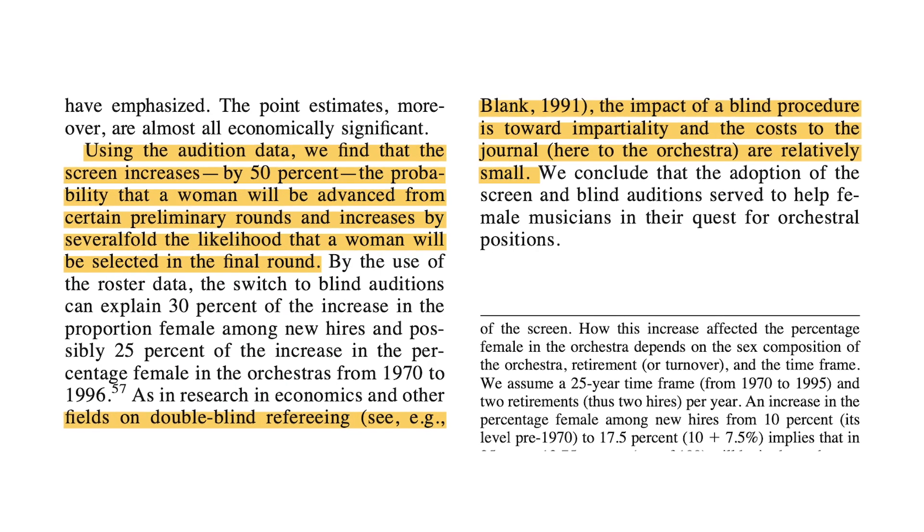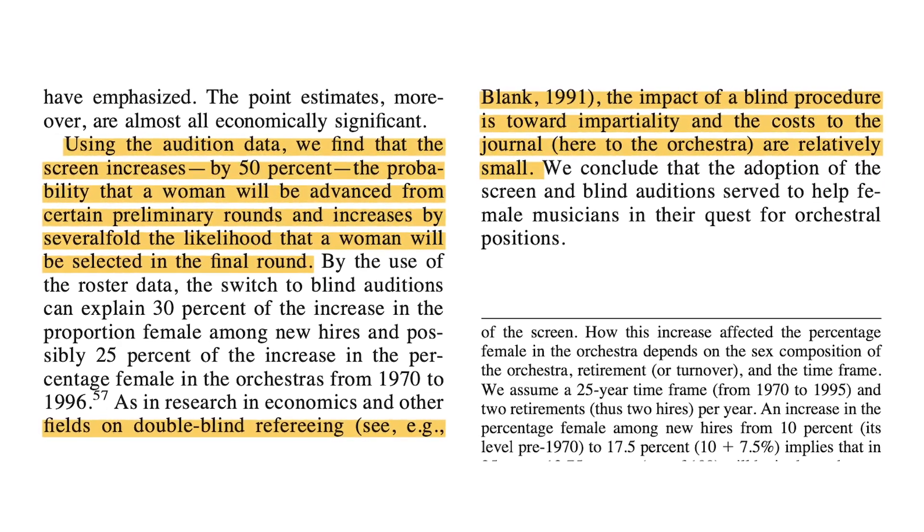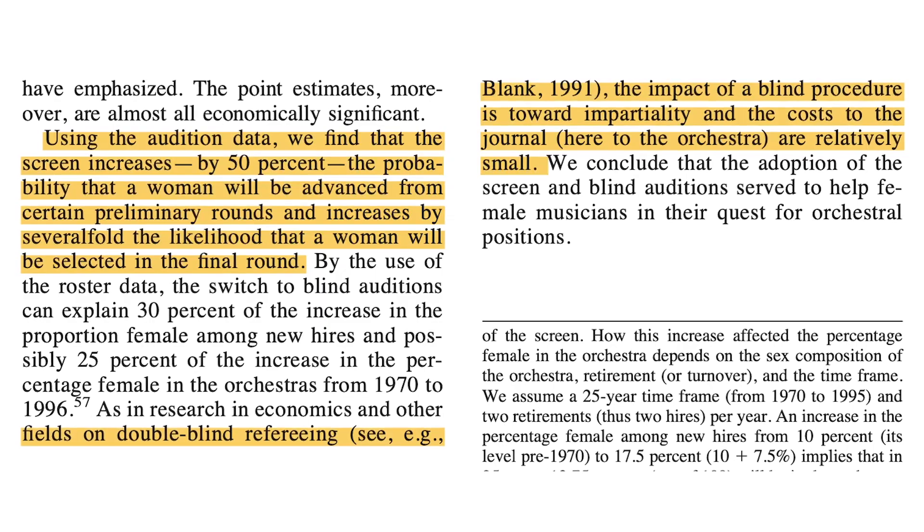Let's look at another example. 'As in research in economics and other fields on double-blind refereeing, the impact of a blind procedure is toward impartiality, and the cost to the journal or orchestra are relatively small.' Why did I highlight that? It's a good argument: blinding people to someone's gender identity can reduce bias and doesn't really cost anything. That strong logical statement is exactly what I need in my introduction to justify my research question.